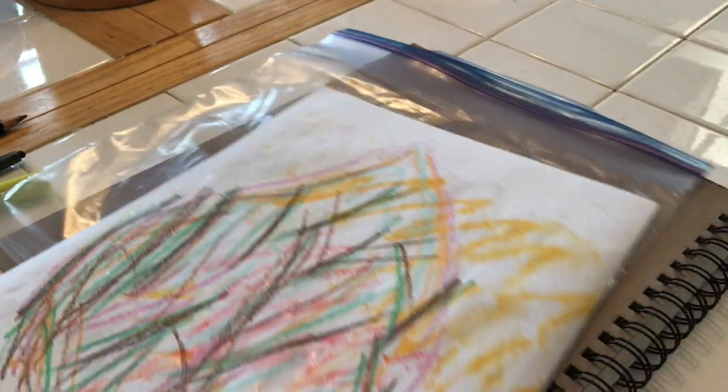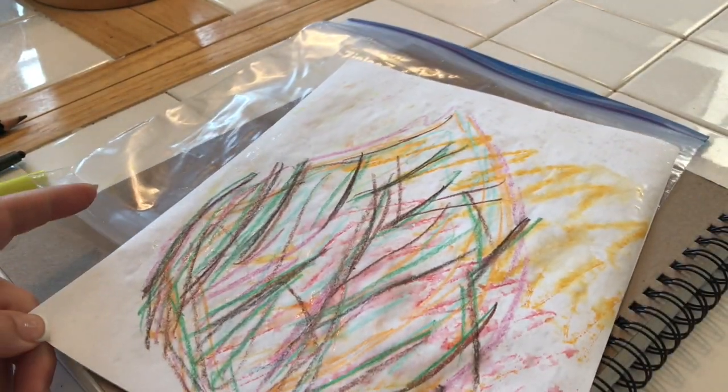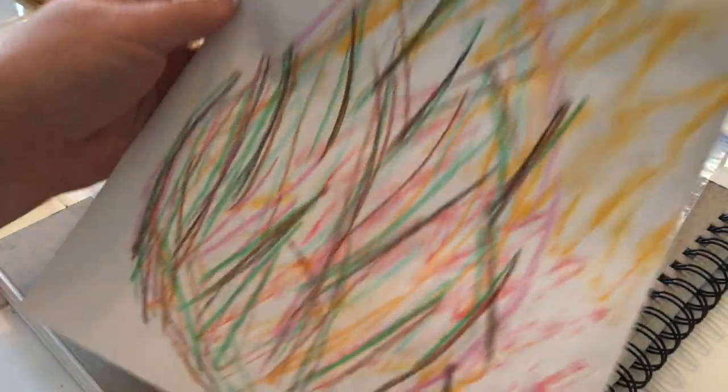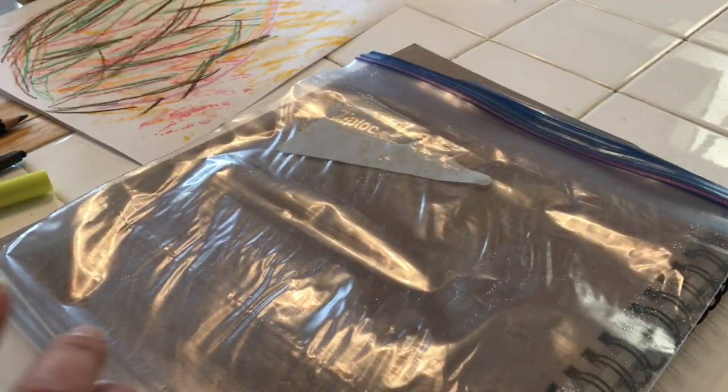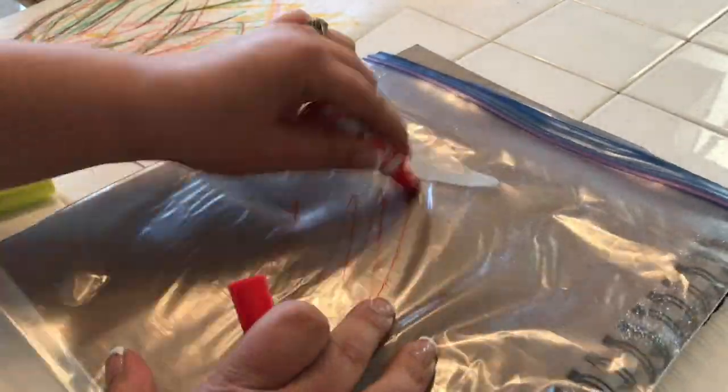All right, we've patted it. Now peel it off. And if you notice, the color is transferred over to the paper. Let's go ahead and do that one more time. Get some of that bottom corner done. I'm going to add a little more red.